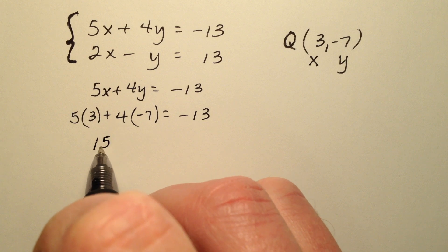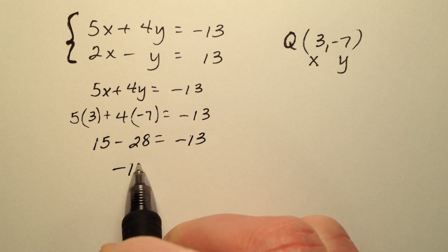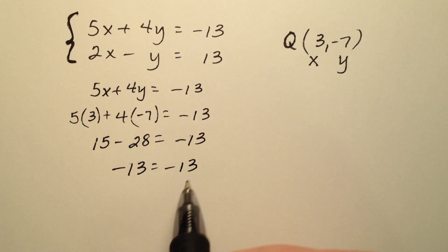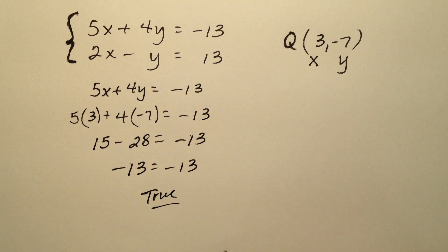So 15 minus 28 equals negative 13. And indeed, negative 13 equals negative 13. So the first one worked out, so this guy is true.